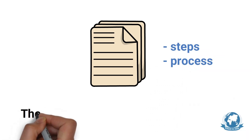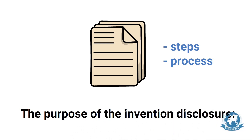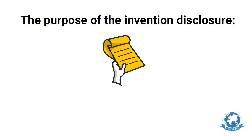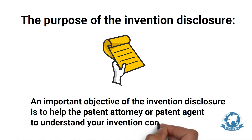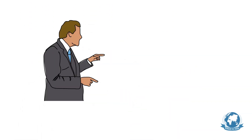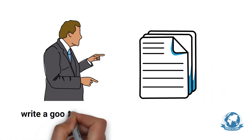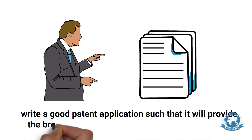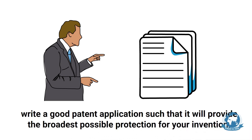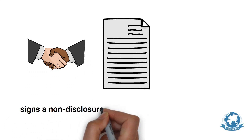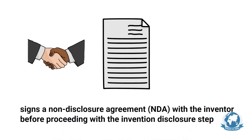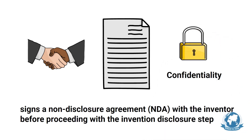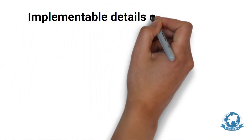Before we begin the steps for creating a complete invention disclosure, let us understand its purpose. An important objective of the invention disclosure is to help the patent attorney or patent agent understand your invention completely — the patent attorney should be able to stand in your shoes and see all the details, to draft a patent application that provides the broadest possible protection. Since a patent attorney or IP firm signs a non-disclosure agreement (NDA) with the inventor before proceeding, your confidentiality is maintained at all levels, so you need not worry about privacy.